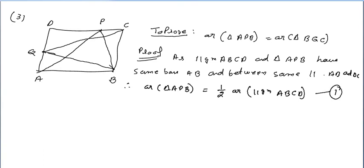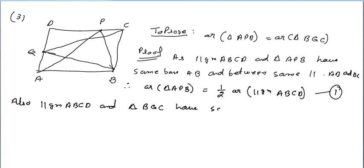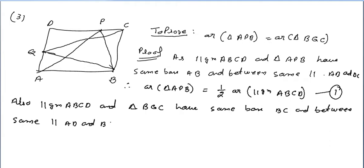Also, parallelogram ABCD and triangle BQC have the same base BC and lie between the same parallels AD and BC. Therefore, area of triangle BQC equals half the area of parallelogram ABCD. This is equation number 2.